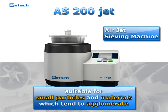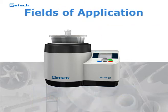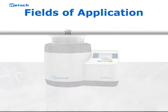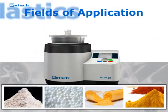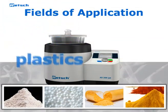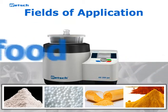The AS200Jet is particularly suitable for small particle sizes and materials which tend to agglomerate. Therefore, the sieving machine is primarily used in the following fields of application: construction materials, especially cement; plastics; pharmaceutical products; and food.